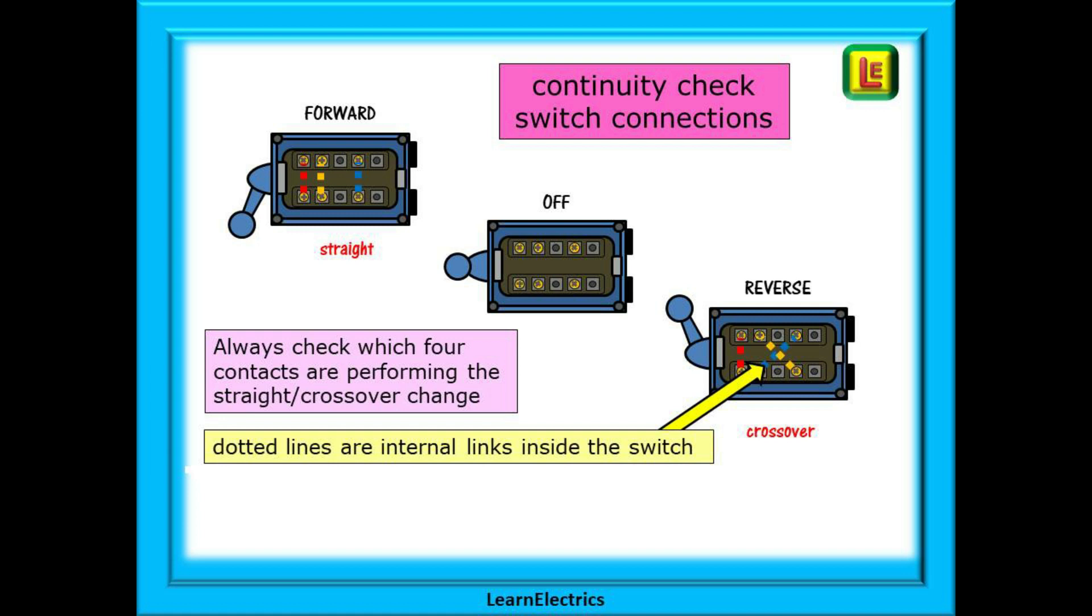We have shown here a typical switch. One pair of contacts is permanently a straight through connection shown by the red dotted line. But there are also four contacts that perform the required crossover connections and these are shown by the orange and blue dotted lines. These connections are made internally within the switch and cannot be seen. So we need to test to know.